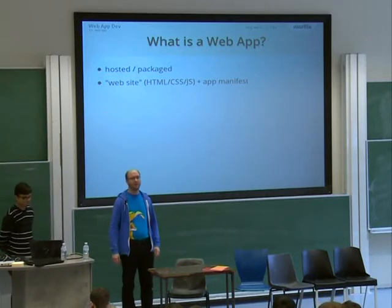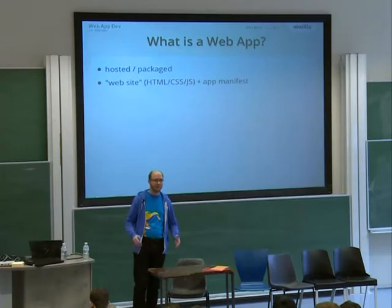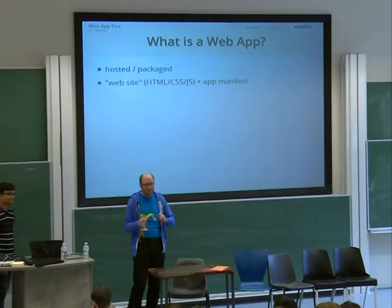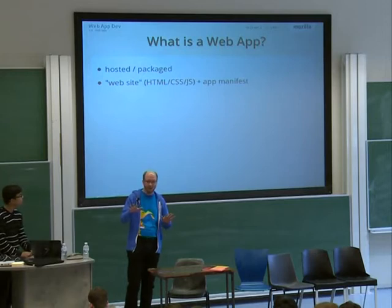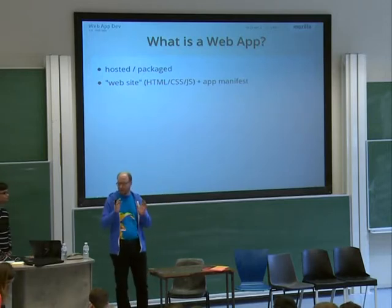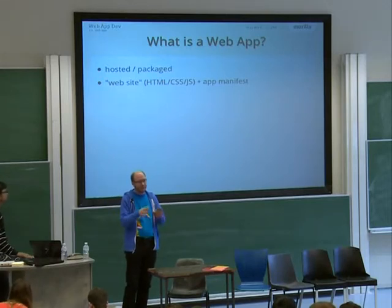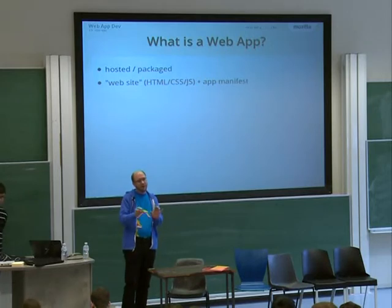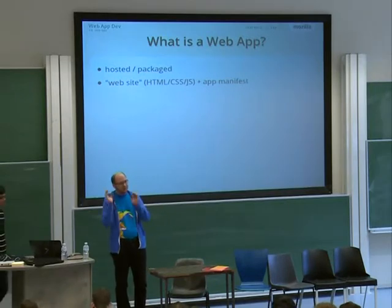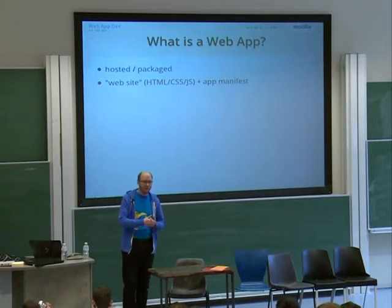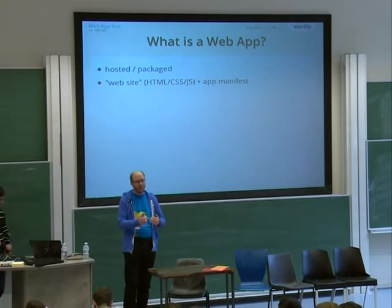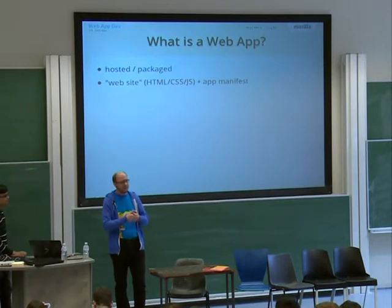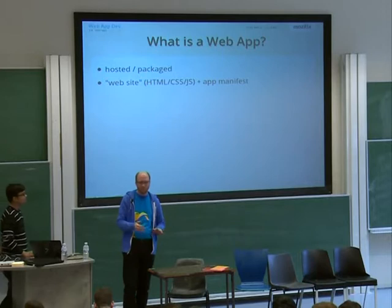So what is a web app? For those of you who already have done some, you probably know this already. We have two types of web apps basically: hosted and packaged ones. The hosted ones are just normal websites — HTML, CSS, JavaScript — with the only addition of having a small app manifest that describes it. The packaged apps are the same thing, just packaged up in a zip file and downloaded locally to the device when you install them, which makes it easier to deal with offline capabilities. For hosted apps, there's stuff to make them work offline as well, but that's a bit more complicated.